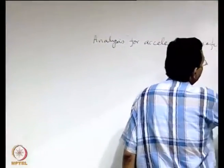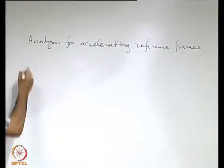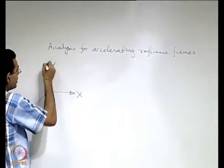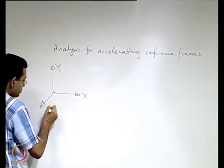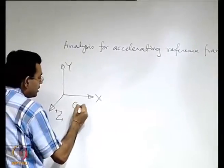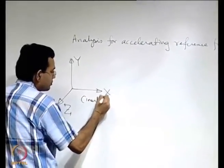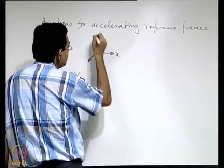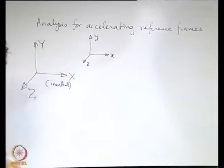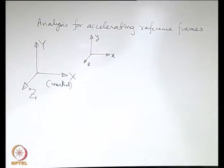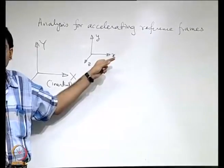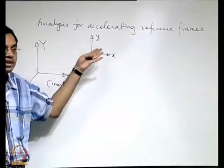We will use the following nomenclature: capital X, Y, Z for an inertial reference frame, and small x, y, z for a moving reference frame — which may be inertial or non-inertial. If it is moving with acceleration it is non-inertial; if moving with uniform velocity it is still inertial. A frame moving with an angular velocity is non-inertial.